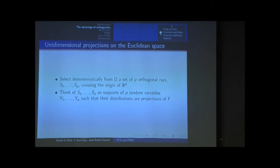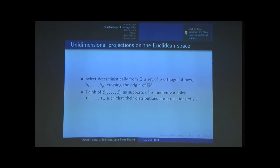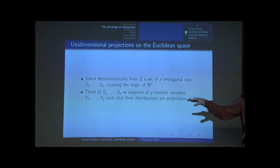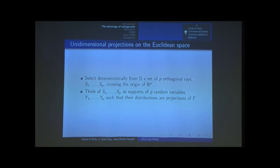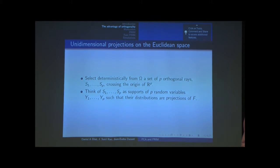We can select deterministically from omega a set of p orthogonal rays, or supports, S1 to Sp, crossing the origin of the p-dimensional Euclidean space. These rays are going to be the supports of p orthogonal random variables. We are not necessarily thinking about principal components here — they can be any set of orthogonal random variables in the p-dimensional space, and they are projections of the p-dimensional distribution.